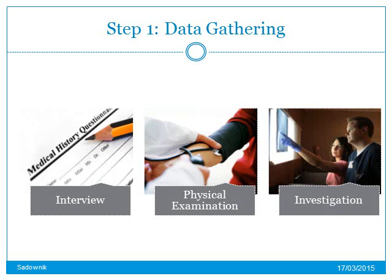The first step of this process is to gather data and analyze information systematically from a patient. Students follow a set sequence of questions when interviewing patients. They begin with a history of presenting illness, review of systems, past medical and surgical history, medications, allergies, etc. They then go on to do a standard clinical examination of the patient. Finally, they may choose to order additional investigations.